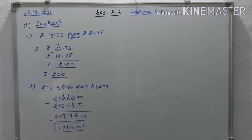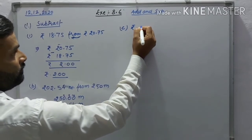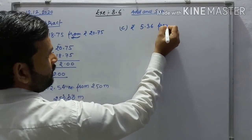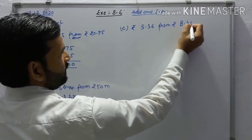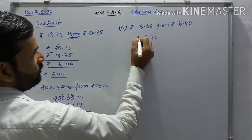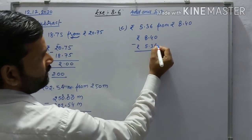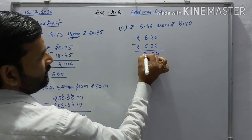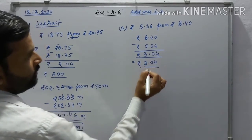Question (c): subtract rupees 5.36 from rupees 8.40. Write 8.40 minus 5.36. Carry: 10 minus 6 is 4, 3 minus 3 is 0 — the answer is rupees 3.04.